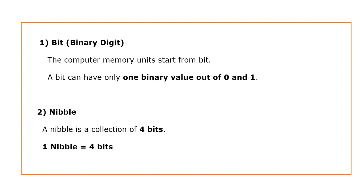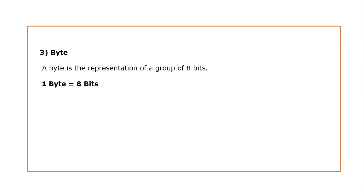A nibble is a collection of 4 bits, so 1 nibble is equal to 4 bits. You have to understand these terms and write them down in your notebook — these are very, very important. The next memory unit is a byte. A byte is a representation of a group of 8 bits, so 1 byte is equal to 8 bits.